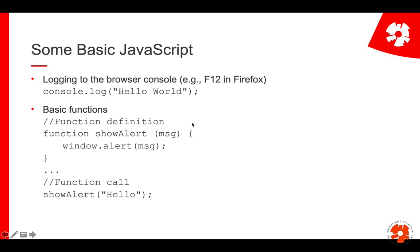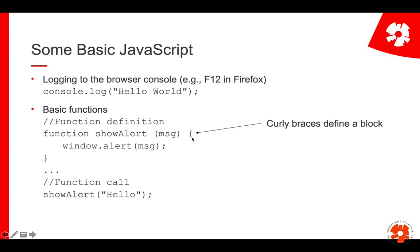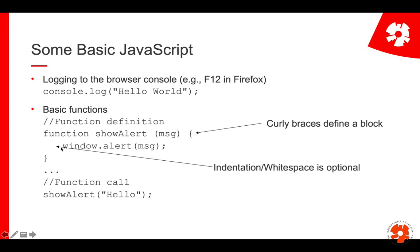Of course we would like to do functions. Whenever we do programming, we want to have functions so we can reuse code. The way this works in JavaScript is that you simply say 'function', you define a name, and you define parameters. You don't have a return type - that's implicit - so you can just say return whatever you want. The curly braces define that there is a new block. This is not as in Python - here the curly braces define scope, not indentation. Indentation is optional, it's just for styling.